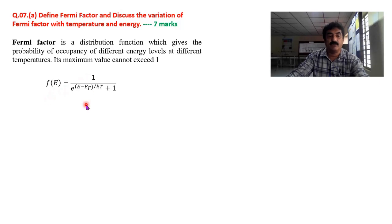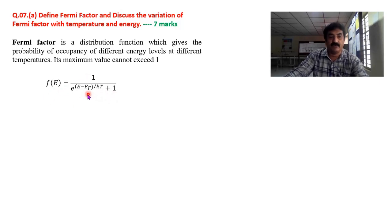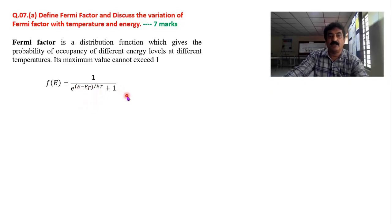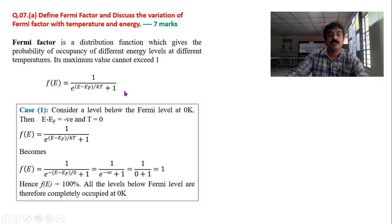The Fermi factor is given by the formula: F(E) = 1 / [e^((E - EF)/kT) + 1], where EF is Fermi energy, E is the energy level either below or above the Fermi level, K is Boltzmann constant, and T is absolute temperature.